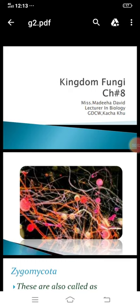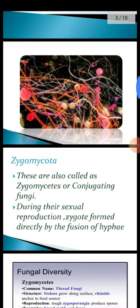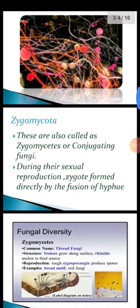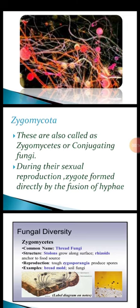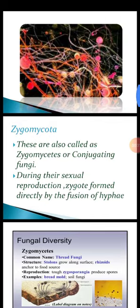Today in biology, Kingdom Fungi, you will learn about some groups of fungi like Zygomycota. These are also known as Zygomycetes or conjugating fungi, able to exchange their genetic material during sexual reproduction. A zygote is formed directly by the fusion or union of hyphae.